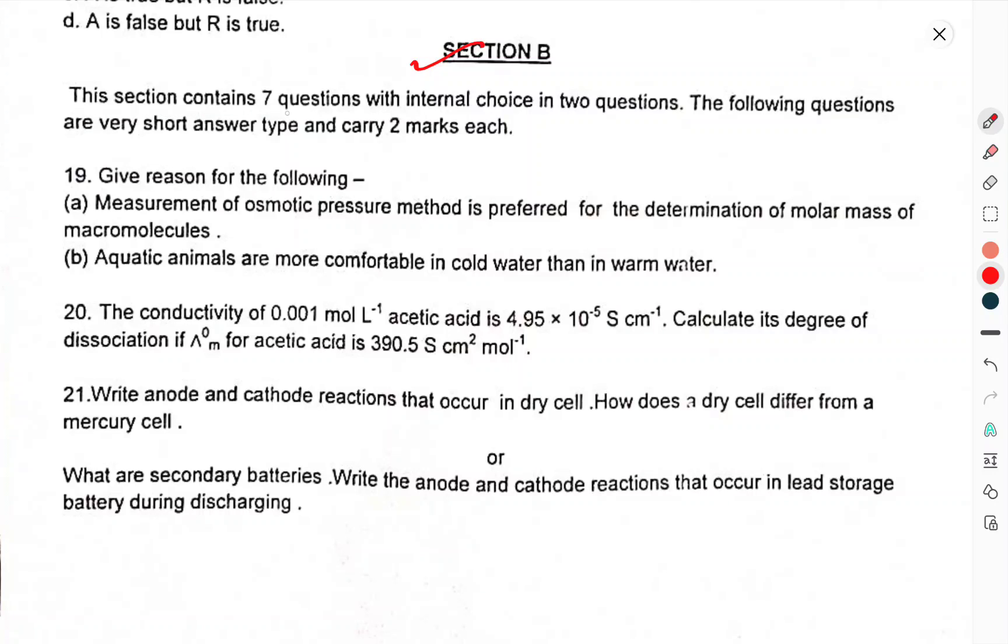Ambidentate ligands have two different donor atoms. Question 18: Assertion: An aqueous solution of NaCl freezes below 273 Kelvin. Reason: Vapor pressure of this solution is less than that of pure solvent. Section B: This section contains seven questions with internal choice of two questions. The following questions are very short answer type, carrying 2 marks each. Question 19: Give reason for the following - Measurement of osmotic pressure method is preferred in determination of molar mass of macromolecules. Aquatic animals are more comfortable in cold water than in warm water.